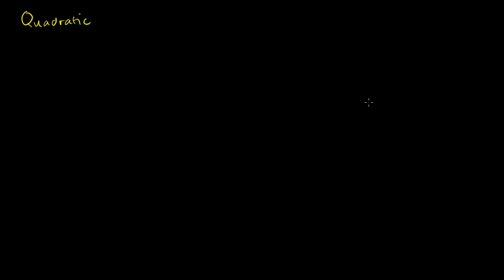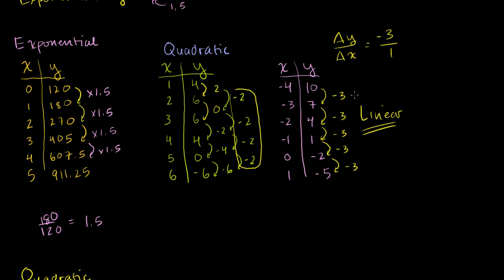In the last video, I told you that for a quadratic function the change in the change of y is constant. This is what we did in the last video — data from a quadratic function. When x increased from 1 to 2, y increased by 2. From 2 to 3, y increased by 0. From 3 to 4, y decreased by negative 2. So the change in y was not constant, but the change in the change of y was negative 2 each time.